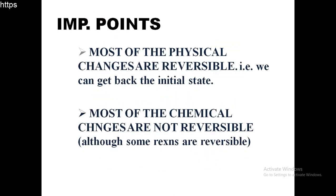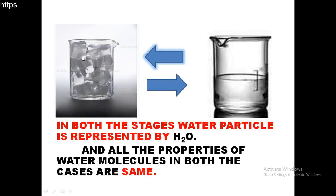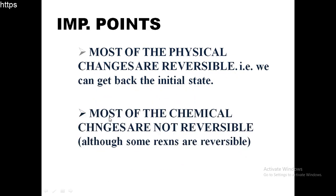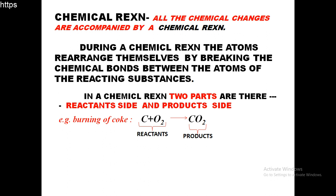Two important points to remember from these two types of changes: most physical changes are reversible - that is, we can get back to the initial state. For example, solid ice converts to liquid water, and when we freeze it, it will again convert to ice. So most physical changes are reversible. But most chemical changes are not reversible, although there are some reactions which are reversible.